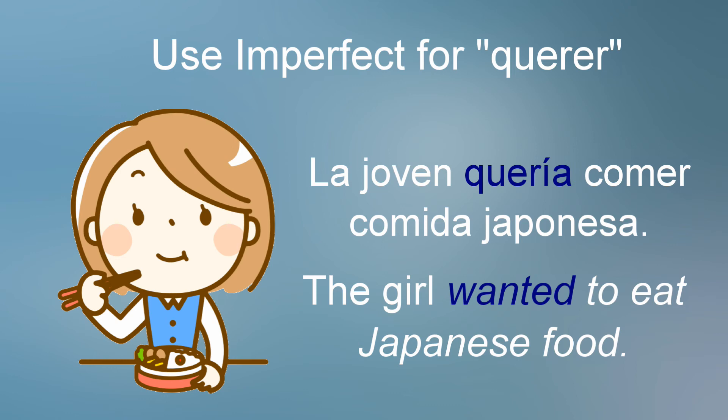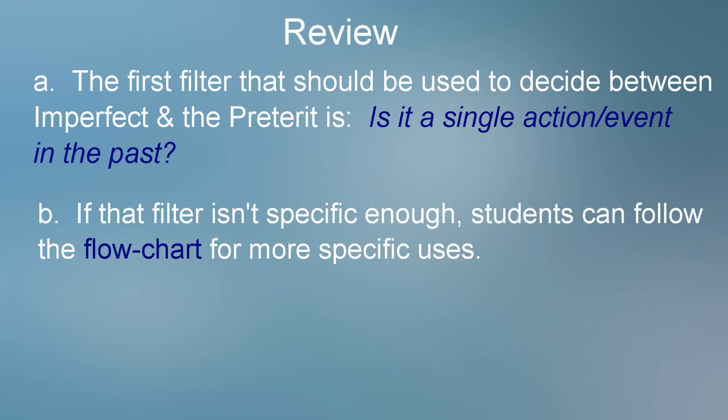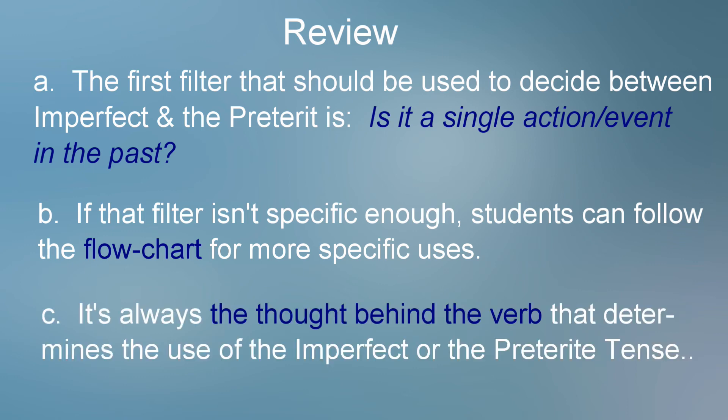Let's recap. The first filter that should be used to decide between the imperfect and the preterite is: is it a single action or event in the past? If that filter isn't specific enough, students can follow the flowchart for more specific uses. It's always the thought behind the verb that determines the use of the imperfect or the preterite tense.